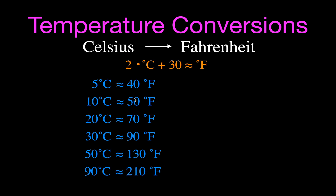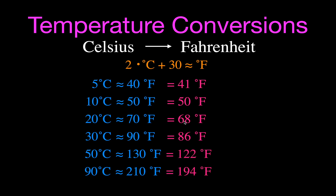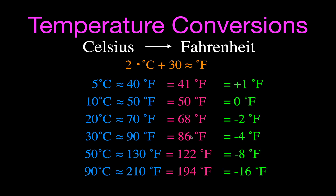Comparing these approximations to the exact values: 5°C is exactly 41°F (we got 40 — one degree off). 10°C is exactly 50°F — perfectly accurate. 20°C is exactly 68°F (we got 70 — two degrees off). 30°C is 86°F (we got 90 — four degrees off). 50°C is 122°F (we got 130 — eight degrees off). 90°C is 194°F (we got 210 — sixteen degrees off). The approximation is best between 5 and 30°C.